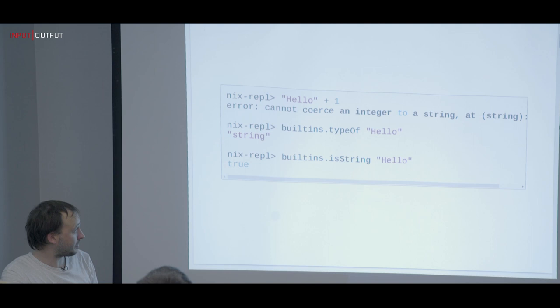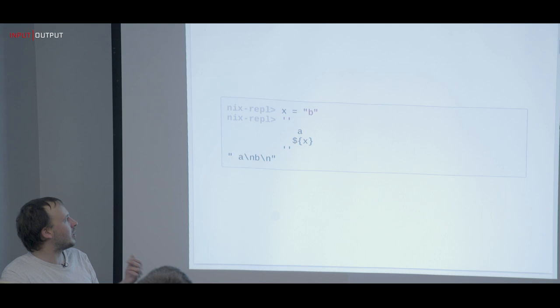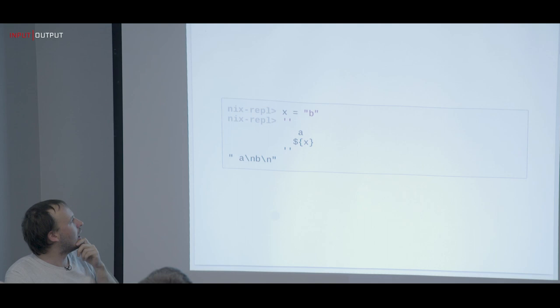You can query what type you have, and you can also check types — for example, asking whether something is a string. As I said, it's a DSL for packaging, so it has special properties. One of them is it has double-quoted strings — those are the plain strings you'd expect.